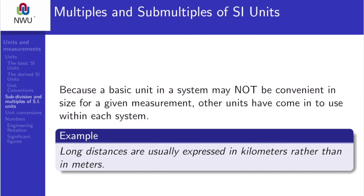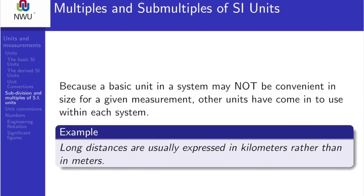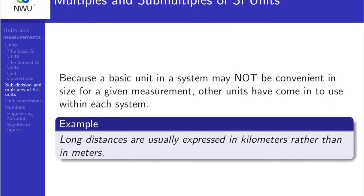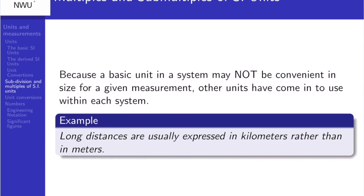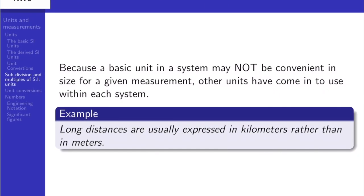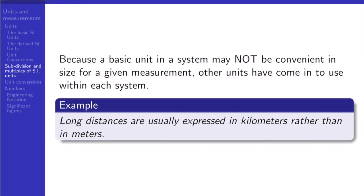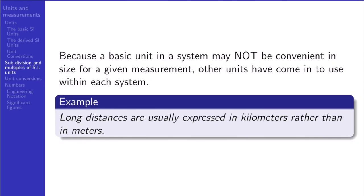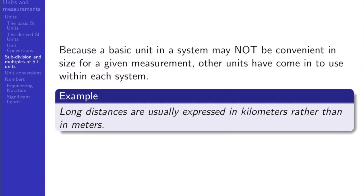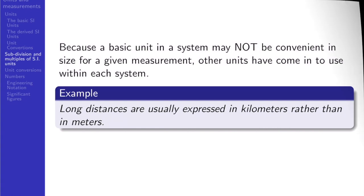Because some basic SI units may not be convenient in size for a given measurement, we have to use alternative methods. For argument's sake, long distances are usually expressed in kilometers rather than in microns or micrometers or nanometers and so forth. You can't actually express the distance from Cape Town to Cairo in millimeters. That won't be convenient. Therefore, we have to introduce what we refer to as multiples and subdivisions of SI units.